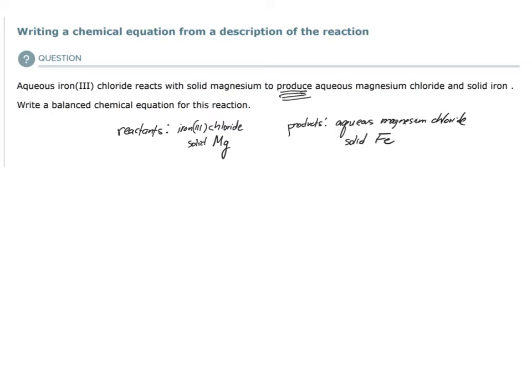Why did we have to identify reactants and products? When we write our chemical equation, remember your reactants are to the left of the yield arrow, and the products are to the right. So that's our first step. Next, we need to make sure we can write the chemical formula for each reactant and product involved in this reaction.